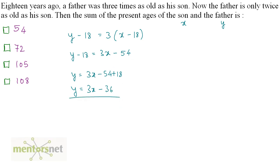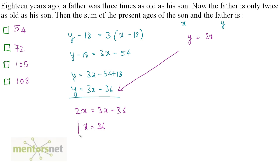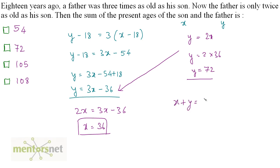Now the father is only twice as old as his son, so y equals 2x. Put y equals 2x into the equation: 2x equals 3x minus 36. Rearranging, 3x minus 2x equals x equals 36. So x is 36, and y equals 2 times 36 equals 72. We have been asked the sum of their present ages: x plus y equals 36 plus 72 equals 108. So the right answer is option D.